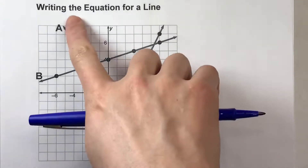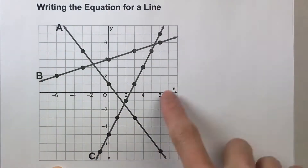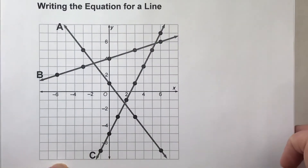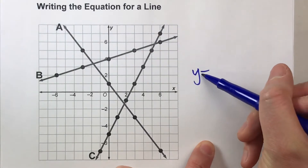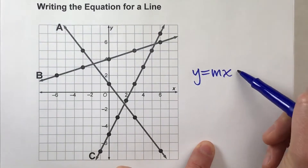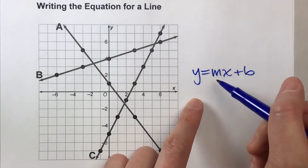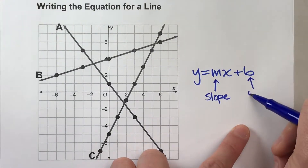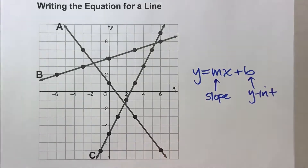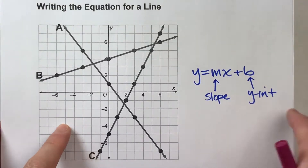Today we are writing the equation for a line. I've given you three lines on a graph, and we're going to write an equation for them. We're going to write them in slope-intercept form. The general equation is y equals mx plus b, where m is the slope and b is the y-intercept. When writing equations for these lines, we're looking for those two things: the slope and the y-intercept.